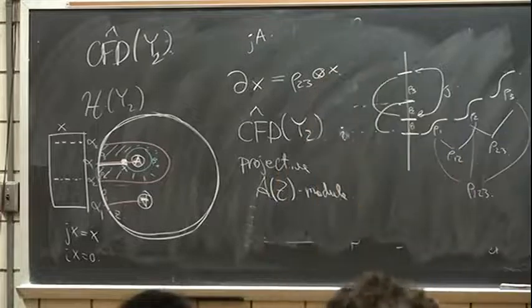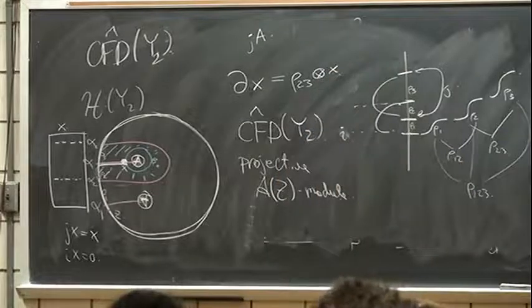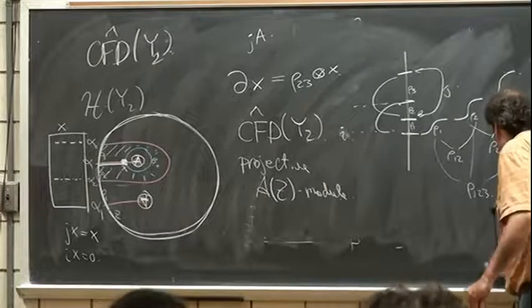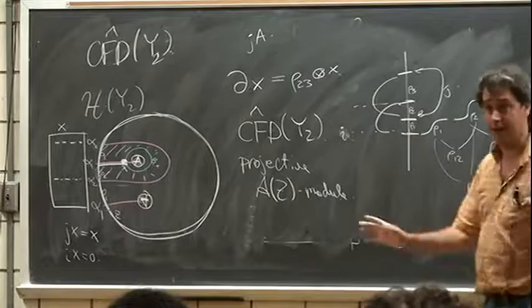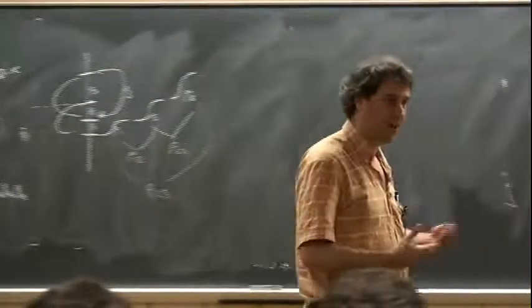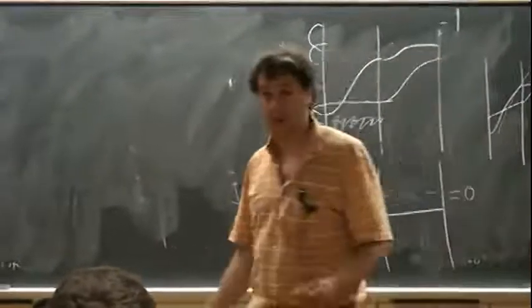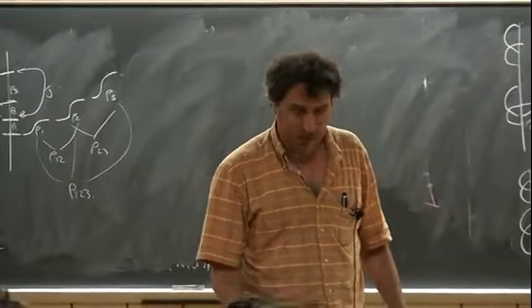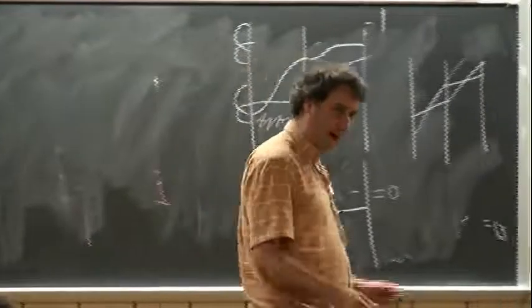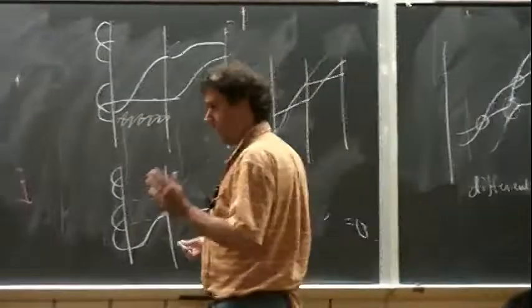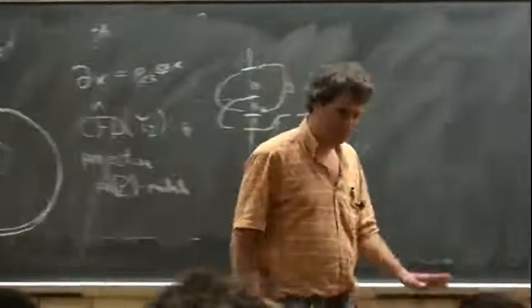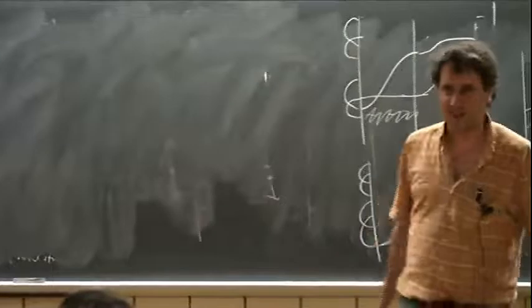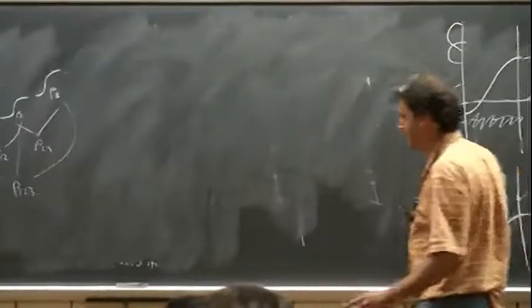Robert said there was a miracle — that the bimodules associated to arc slides are essentially determined by D squared equals zero and a little bit of additional info. I'd like to explain how that is true. This is going to be extremely cheap — my collaborators, if they were paying attention, would be very disappointed, but maybe the audience will be grateful. I'm going to do a very silly special case where there's actually no arc slide: it's the identity bimodule.